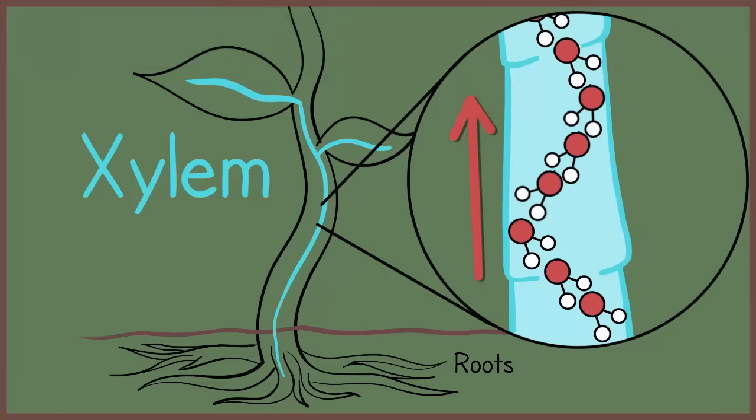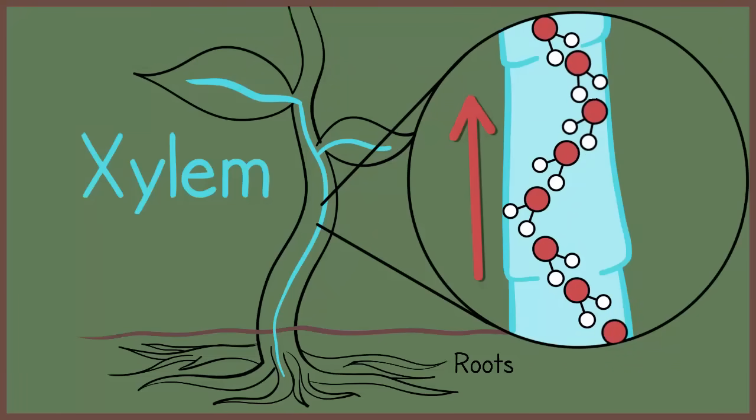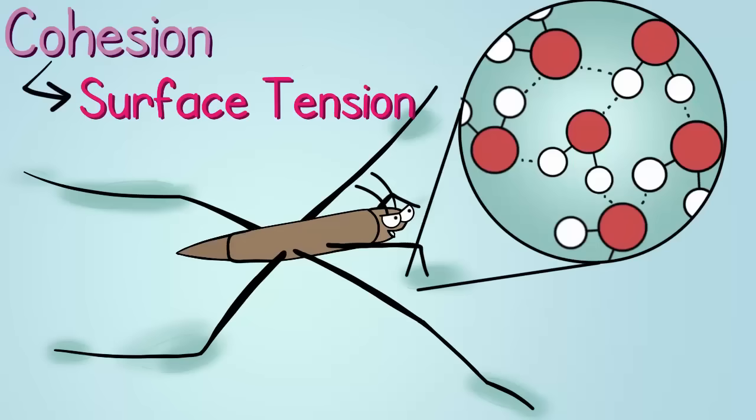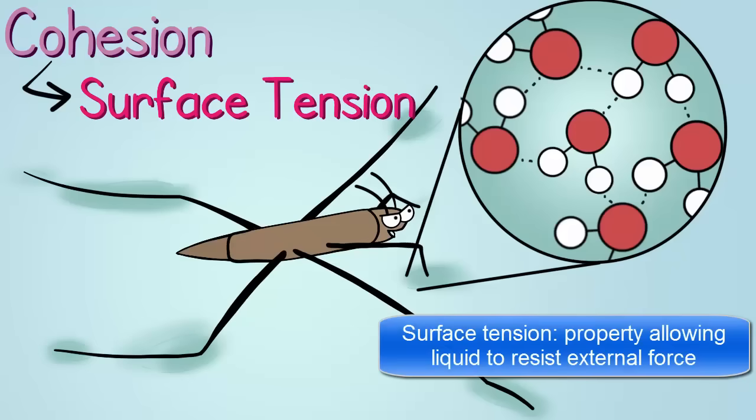This cohesion is really a big deal. Cohesion is also a reason that water striders, one of our favorite insect types, can skate on water. Cohesion contributes to the surface tension of water.